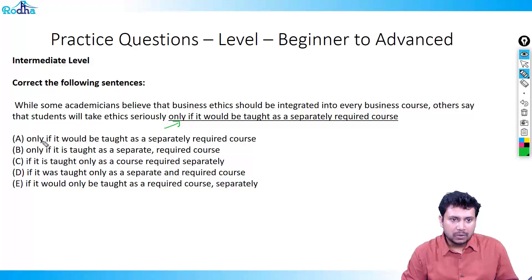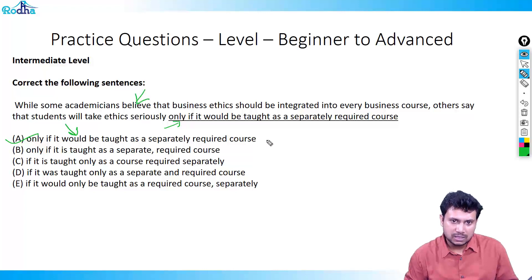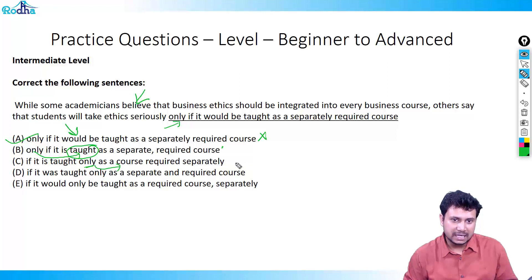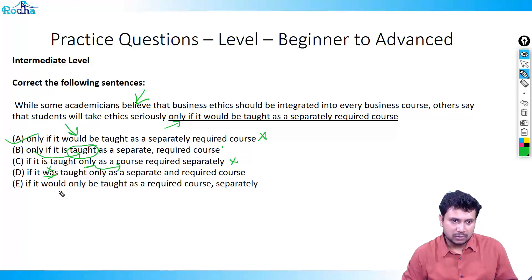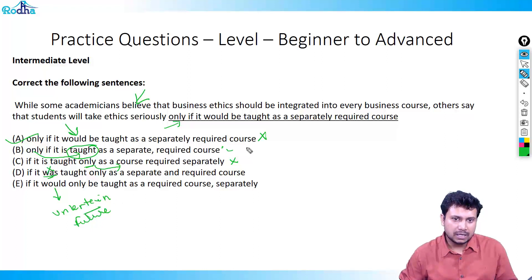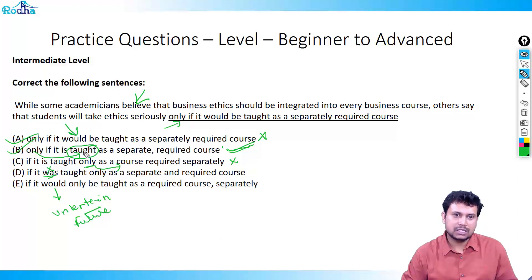The focus is on 'only if it is taught.' Looking at the options: option three places 'only' after 'if it is taught,' so 'only' modifies the course rather than the teaching — that's incorrect. Another option uses 'was taught,' which is wrong tense. 'If it would only be taught' is again uncertain future — also wrong. The right answer is option B, because 'only' correctly modifies the teaching, which is the focus of the question.